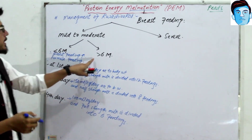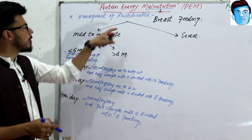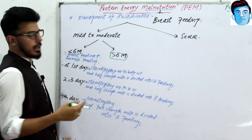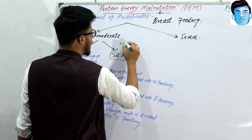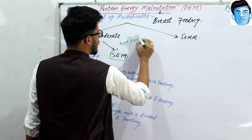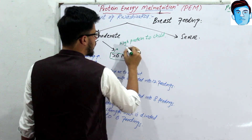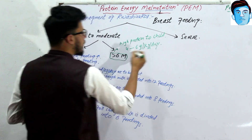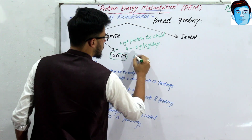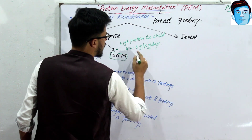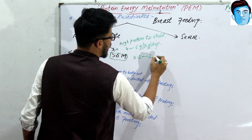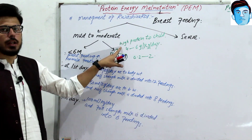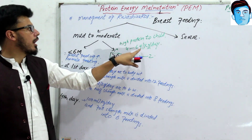If a child is more than six months with mild to moderate kwashiorkor, we give high protein — up to 4 to 6 grams per kg per day. Normally protein ranges from 0.2 to 2 grams per kg per day, but in this condition we exceed it up to 4 to 6 grams per kg per day.